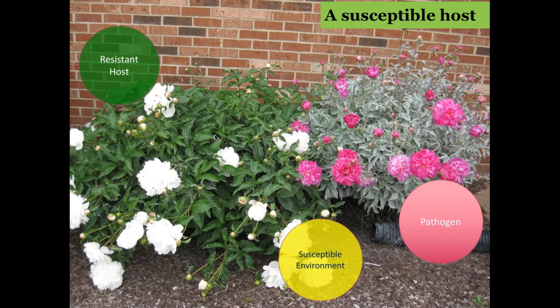When we talk about susceptible hosts — here in Indiana a big part of cut flower production is peonies. You can see that Festiva Maxima on the left is far more powdery mildew resistant than the one on the right. The powdery mildew on the right is on the stem, on the sepals — it's really a mess. Even for cut flower production, starting with resistant varieties is a really great way to manage your plant disease problems.